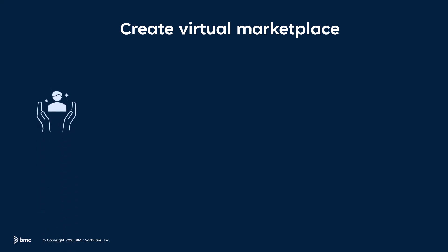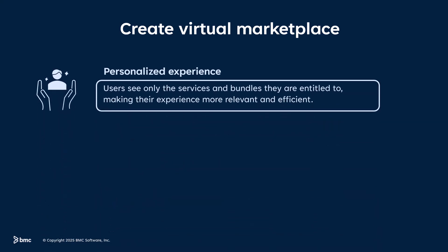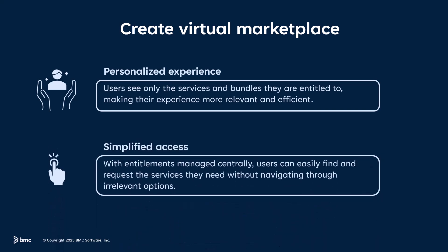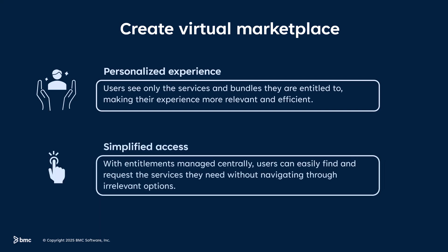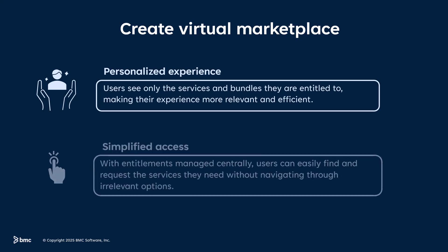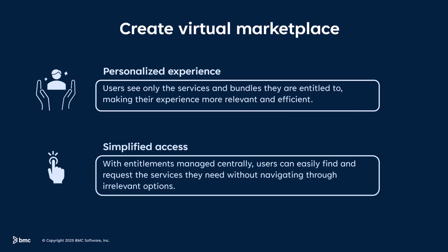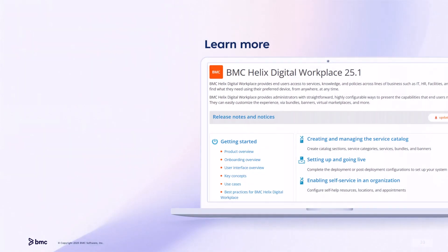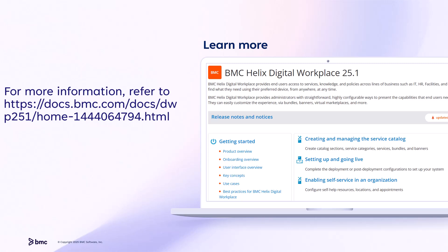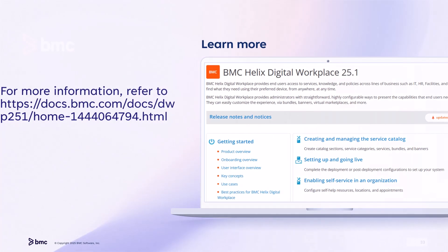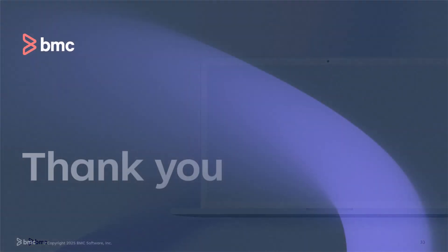Finally, let's take a look at Virtual Marketplaces. Virtual Marketplaces allow Catalog administrators to define exactly which users can view and request specific services, bundles, and banners. This ensures end users only see what they are entitled to, reducing confusion and improving efficiency. Look for detailed information about other features in the BMC Helix Digital Workplace documentation at docs.bmc.com. We hope this video helped you get an overview of the BMC Helix Digital Workplace Catalog. Thank you for watching.